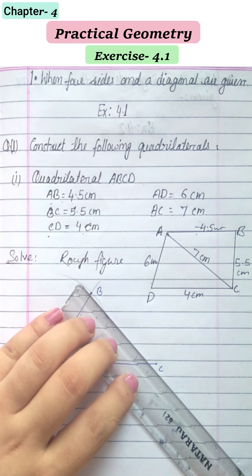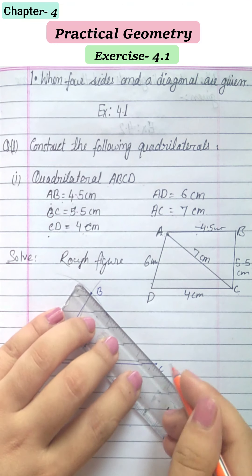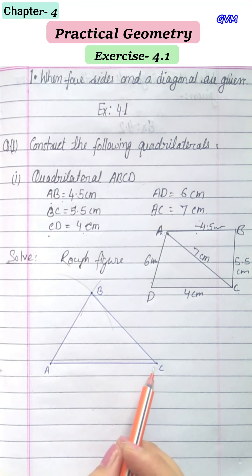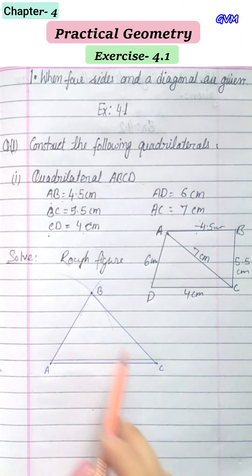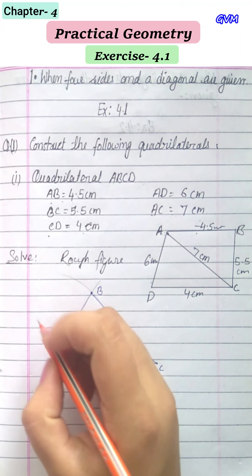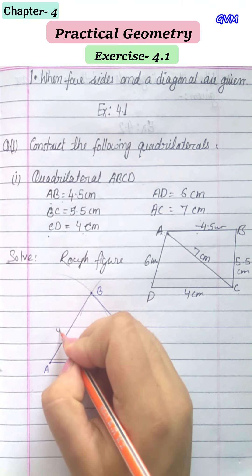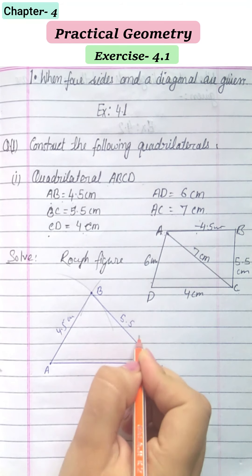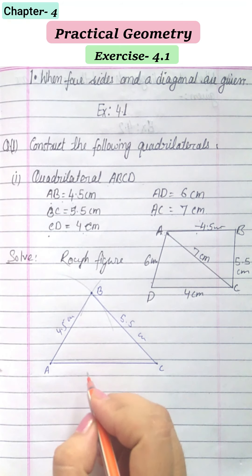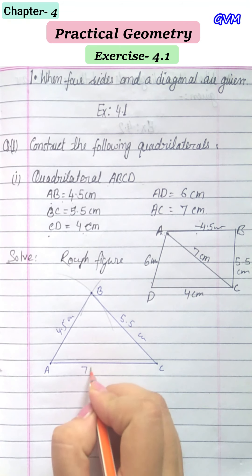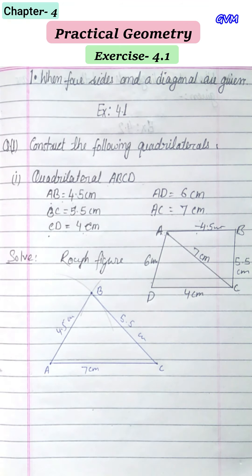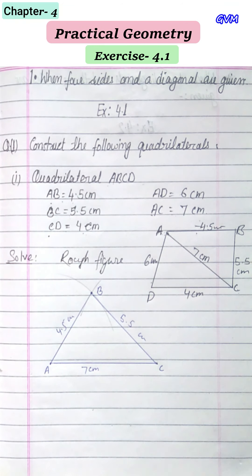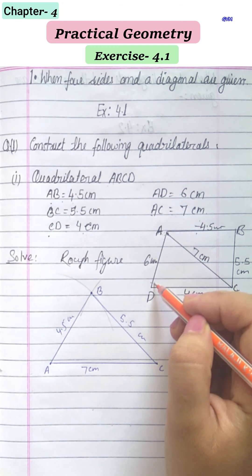Now join points A and B, and points B and C. We have AC = 7 cm, AB = 4.5 cm, and BC = 5.5 cm. This is the upper part of the quadrilateral.